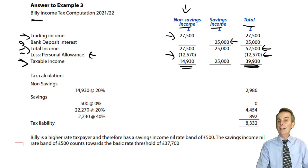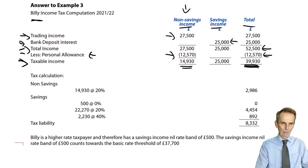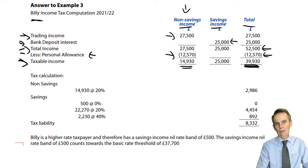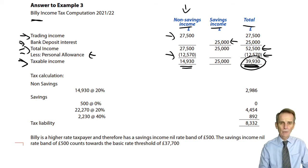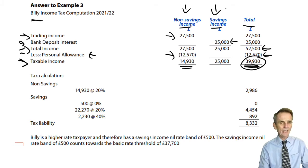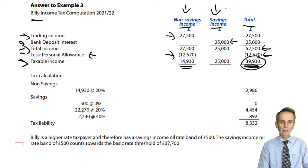£39,930 is bigger than our basic rate band limit of £37,700. So we're dealing with a higher rate taxpayer who has savings income. That means they will still enjoy a savings income nil rate band, but this time it'll only be £500.